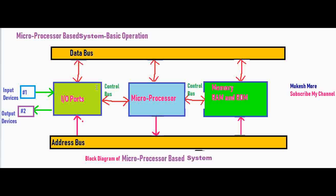We have an input-output port. This block is used for inserting data to the system and generating output from the system. For this input-output port we have two blocks attached: input devices are attached to the microprocessor system and output devices are attached to the microprocessor system. The input devices feed data to the input-output port and output is generated at the output devices. This block is called the input-output port block and it is connected to the microprocessor.